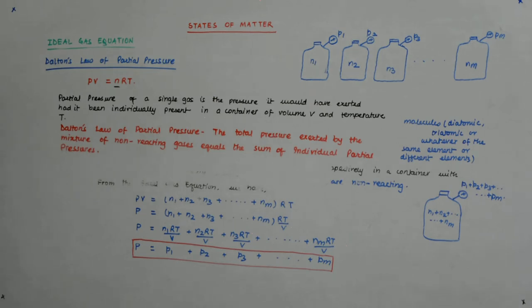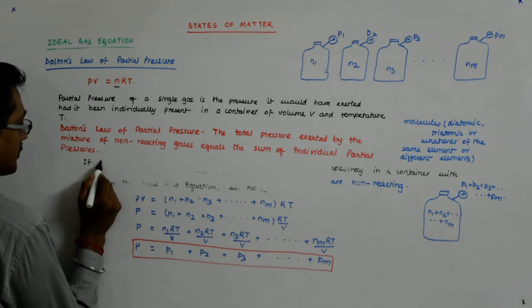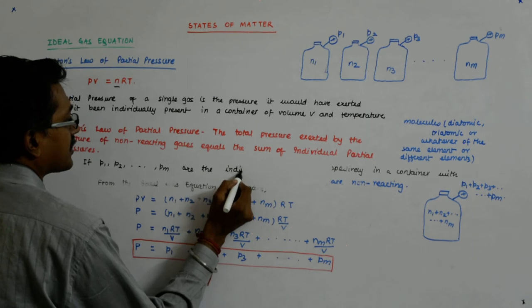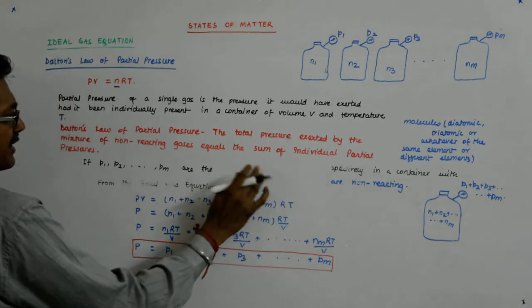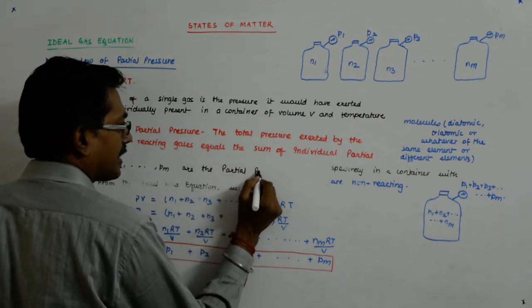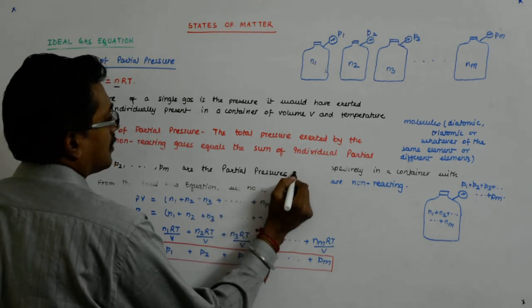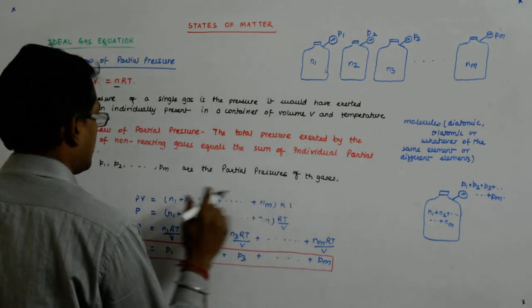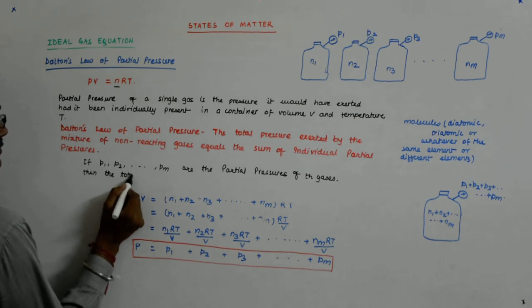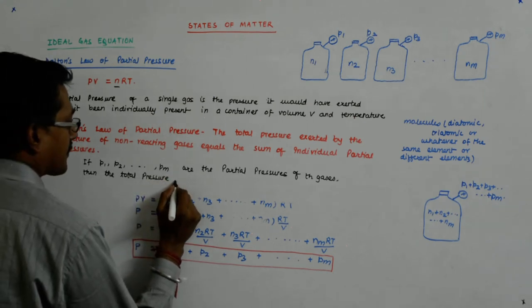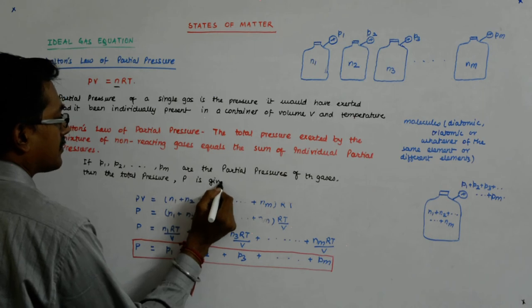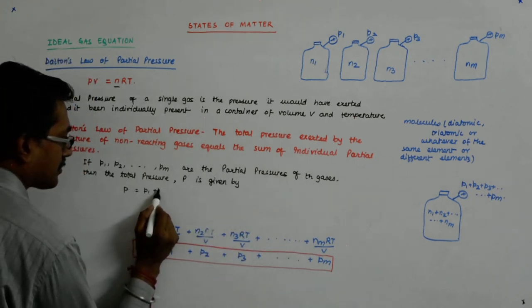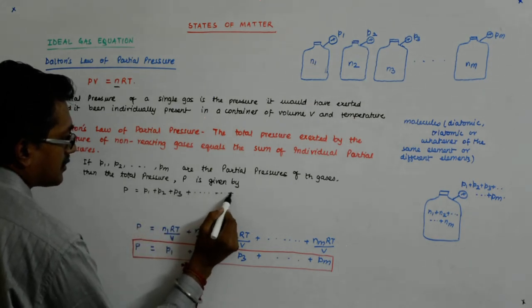So if P1, P2, P3 are the partial pressures, if P1, P2, Pm are the individual - I should not say individual, because the moment it is partial, it is individual. Okay? Partial pressures of the gases, then the total pressure P is given by P equals P1 plus P2 plus P3 plus Pm.